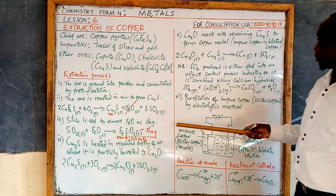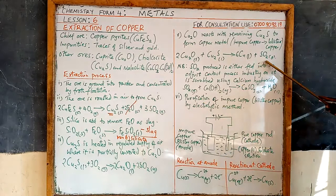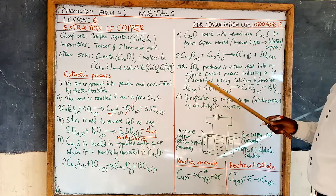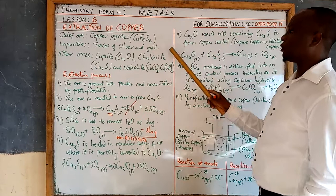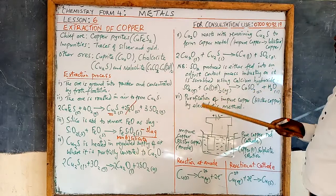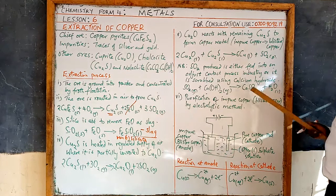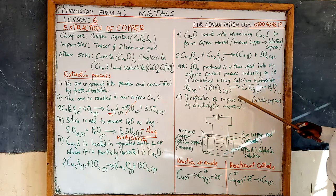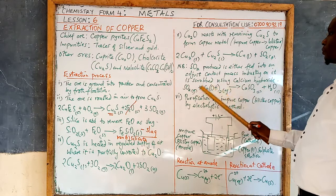Sulphur dioxide is produced in multiple reactions during copper extraction. In fact, of all the metals, copper produces the most sulphur dioxide. Lead and zinc also contain sulphur and produce sulphur dioxide. For such metals, if you have a factory near the extraction site, you can build a contact process factory to manufacture sulphuric acid using sulphur dioxide as the raw material. If there is no such factory, you can scrub the gas — reacting sulphur dioxide with calcium hydroxide — to prevent it entering the atmosphere as an environmental pollutant.